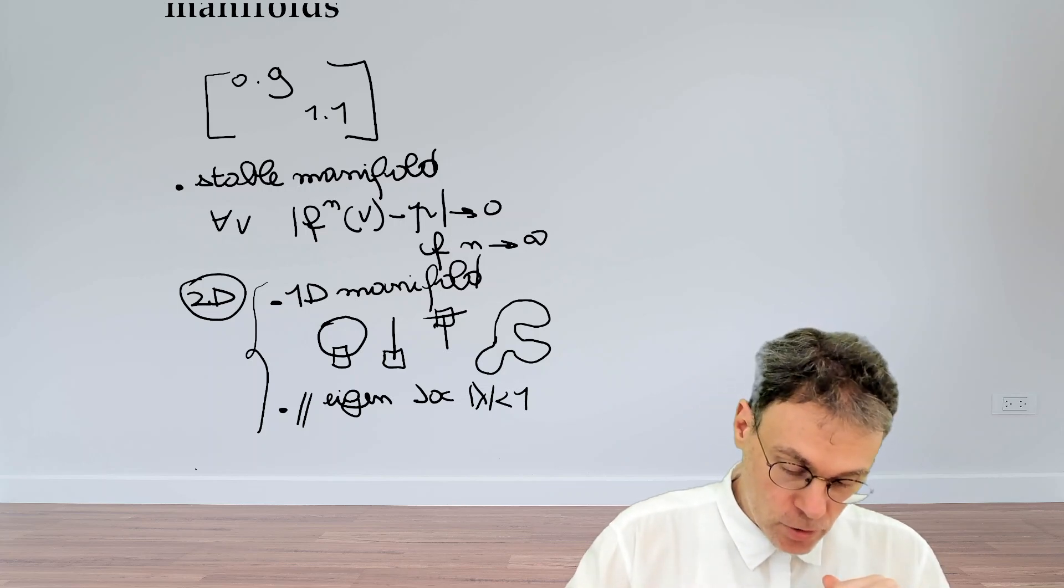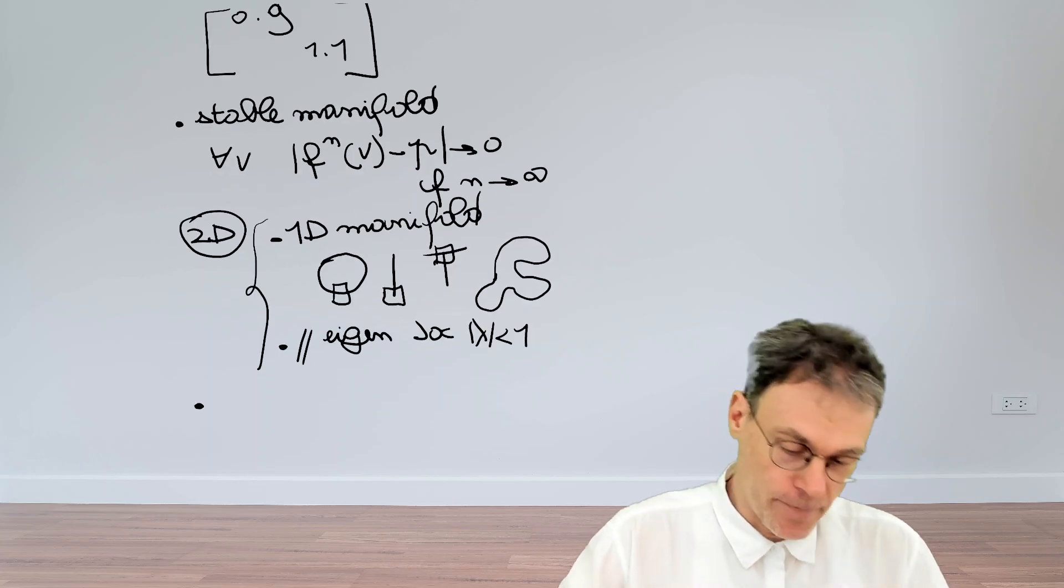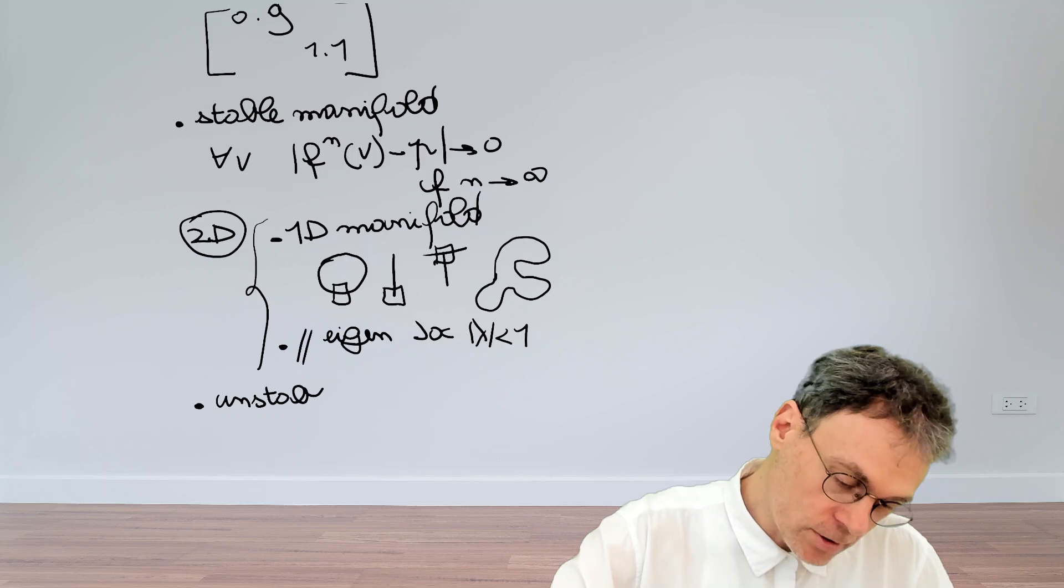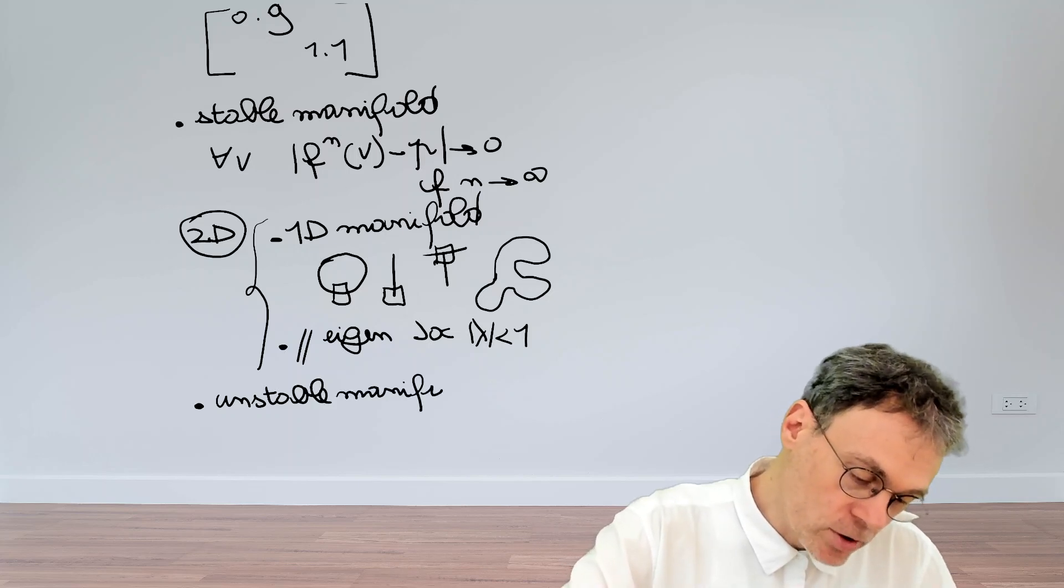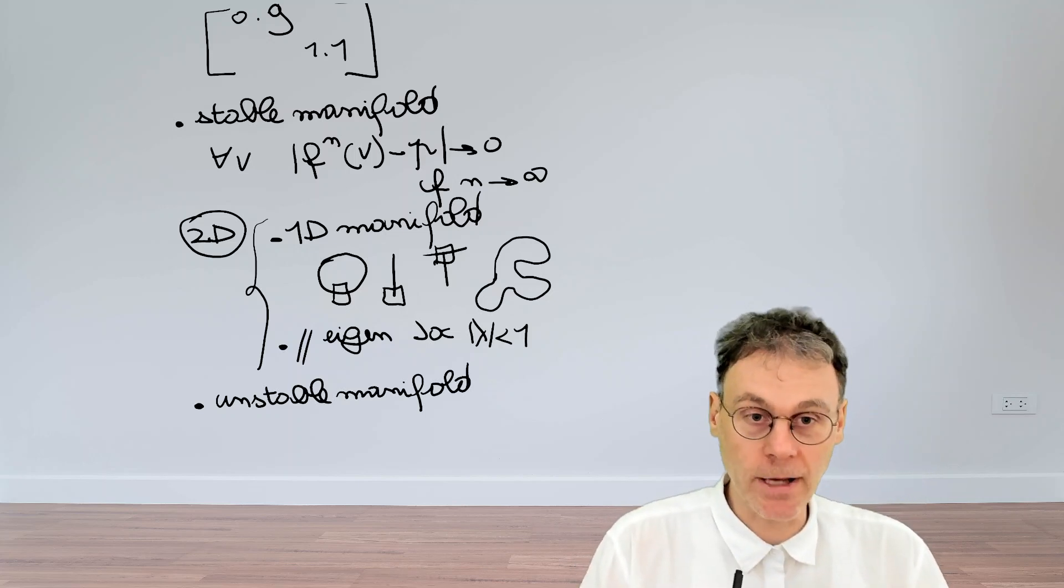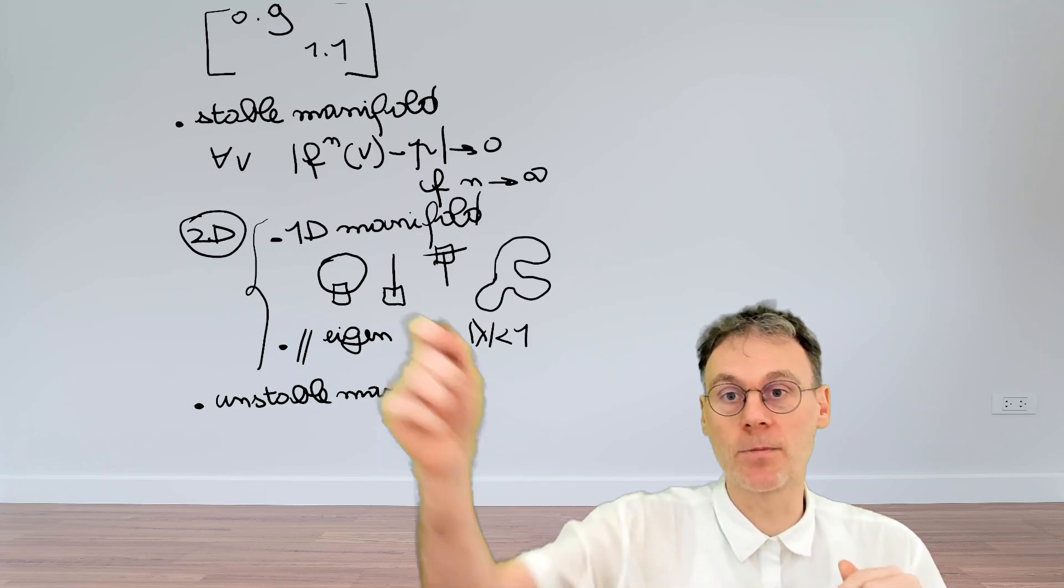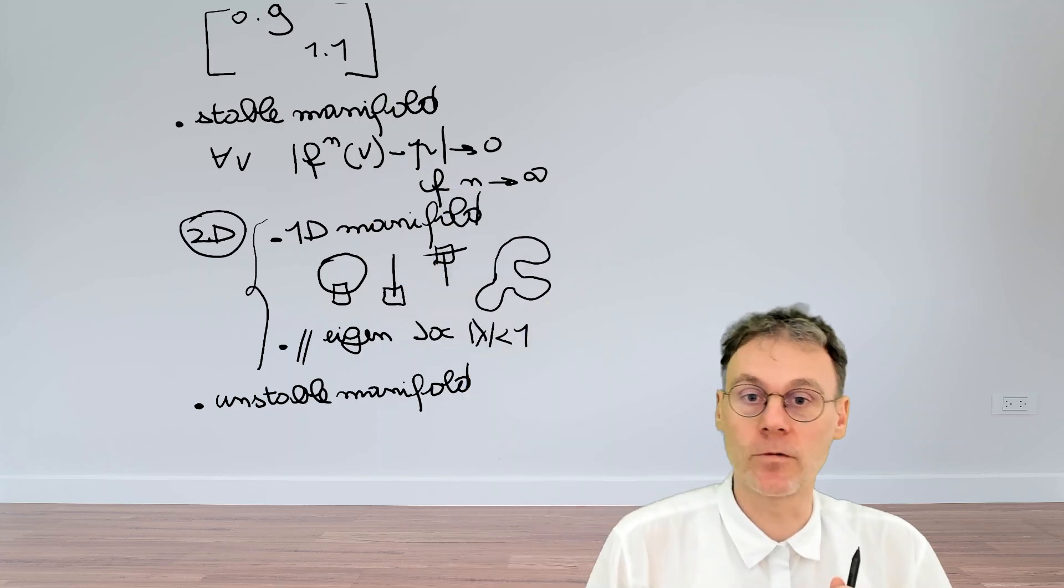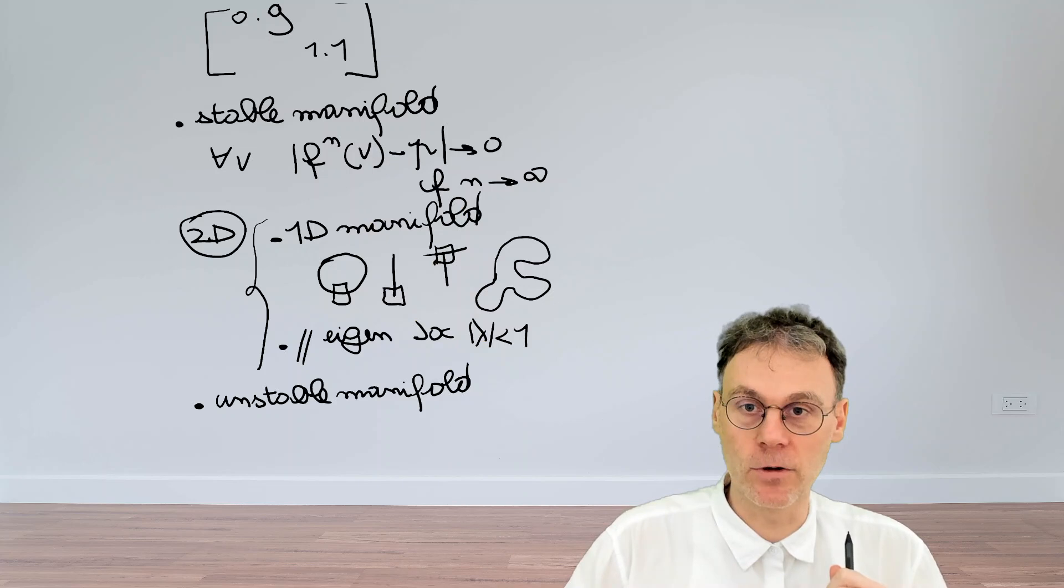But we can of course now also focus on the unstable direction itself and we can define what's called the unstable manifold. Now the unstable manifold for this example we've given is the y-axis. The question is can you give a definition perhaps inspired by that definition over there which results in the y-axis for this particular example. So pause the video and think about this for a while.